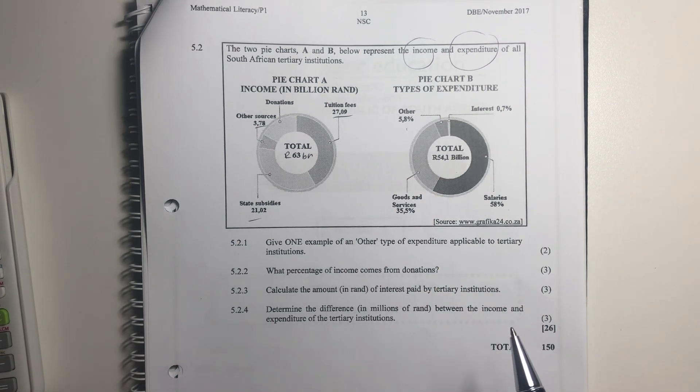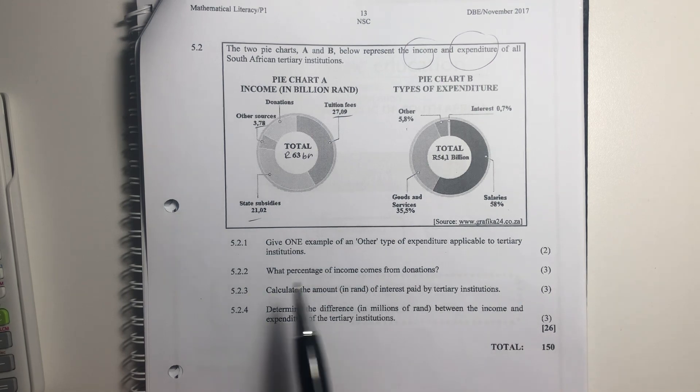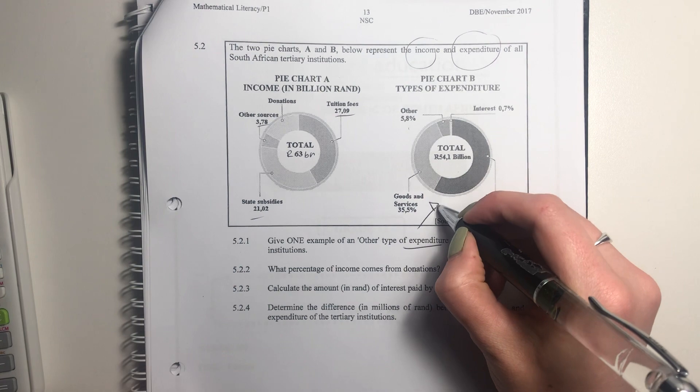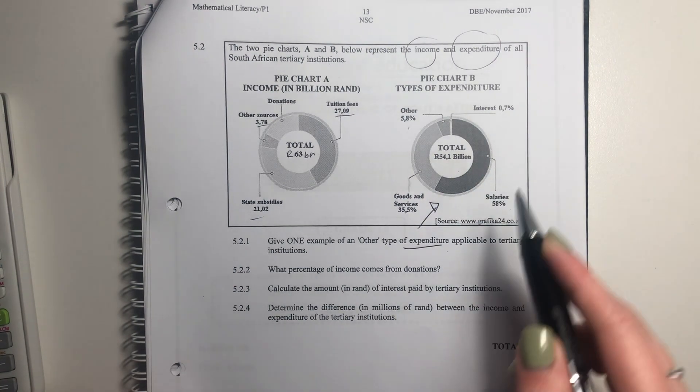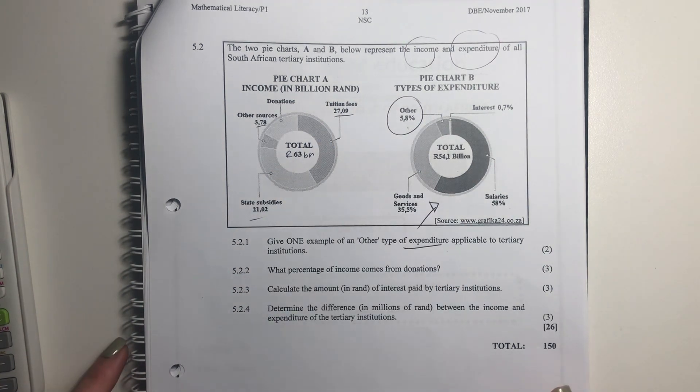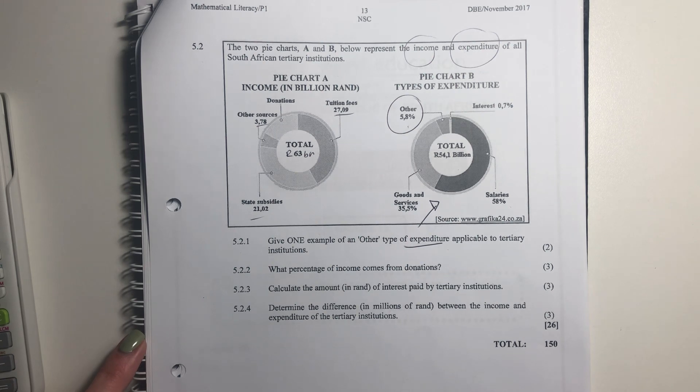So it says, give one example of another type of expenditure applicable to tertiary institutions. So we're looking at other expenditure. This is one of those thinking level four questions. You can't gather this information from what's given. Think about it. What other expenses, other than goods and services, salaries and interests, do you think they would have to pay?